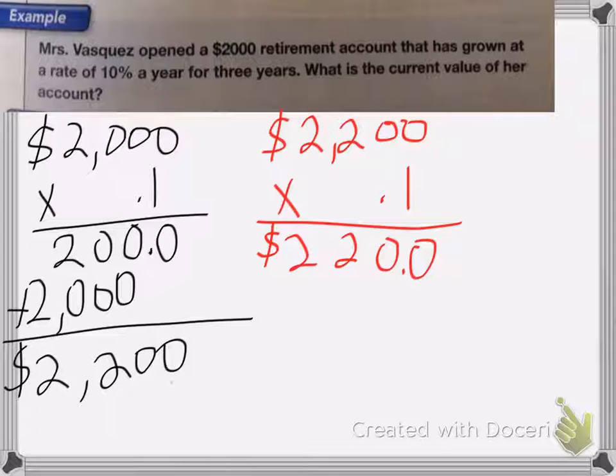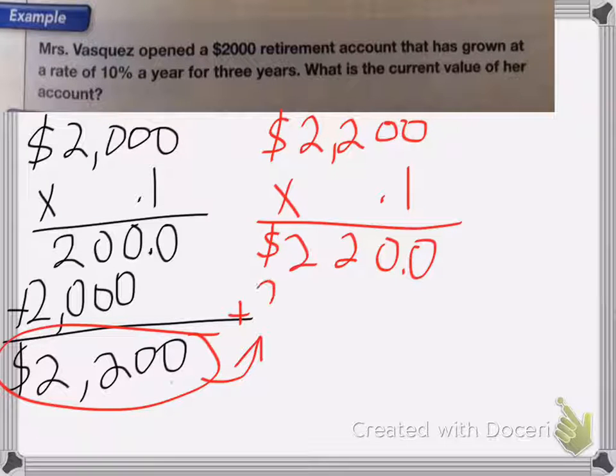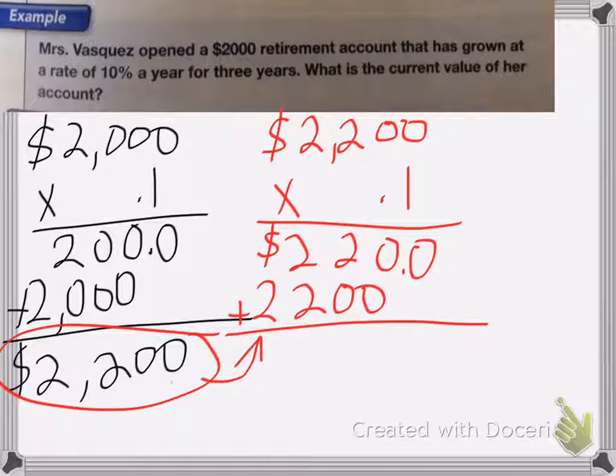And again, I need to add that to the amount that I have here. So I'm going to add that to the $2,200 she had from the previous year. So I end up with $2,420.